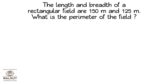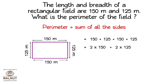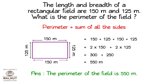The length and the breadth of a rectangular field are 150 meters and 125 meters. What is the perimeter of the field? Perimeter is equal to sum of all the sides: 150 plus 125 plus 150 plus 125, which is equal to 2 into 150 plus 2 into 125, which is equal to 300 plus 250, which is equal to 550 meters. The answer is the perimeter of the field is 550 meters.